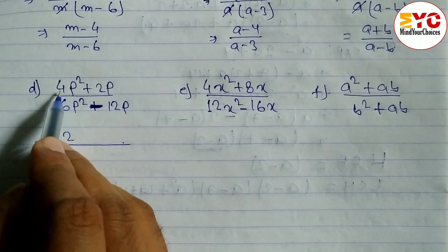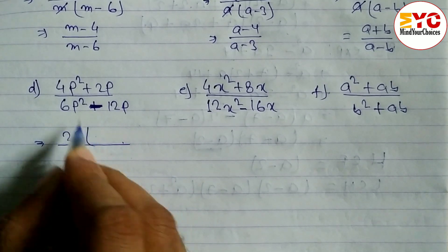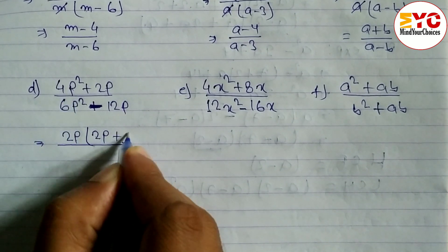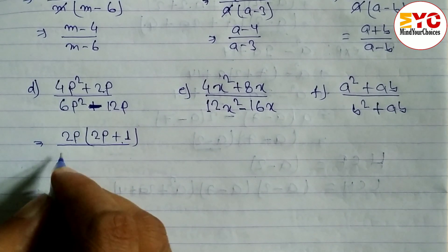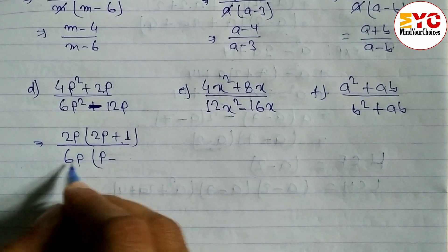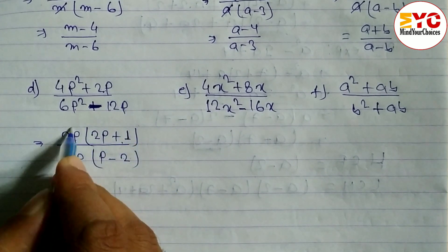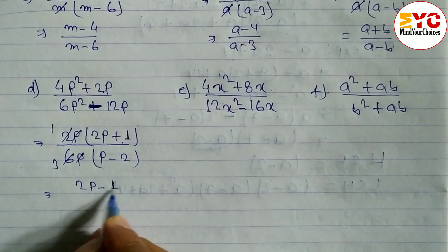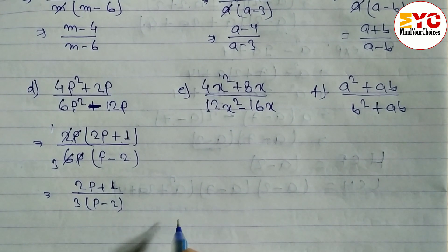Next, question d: in the numerator we have 4p squared plus 2p — we can take 2 common from 4 and 2, and take p common from p squared and p, leaving 2p times (p plus 1). In the denominator, 6p squared minus 12p — we take 6 and p common, leaving 6p times (p minus 2). After cancelling 2 and p, two ones are 2 and two threes are 6, so the answer is 2(p plus 1) over 3(p minus 2).